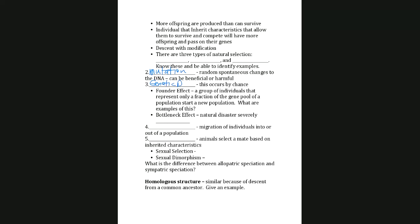Number three is genetic drift — the founder effect. If you watched the video this week, I discuss how the Amish population in Pennsylvania was started by a small number of people. For the most part they don't have a lot of new genes coming in, so they have a higher concentration of certain alleles because of that founder effect.